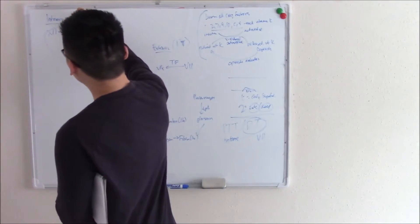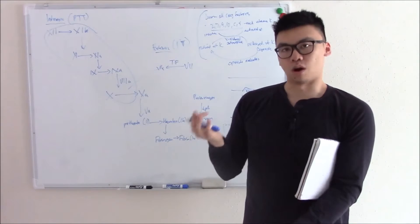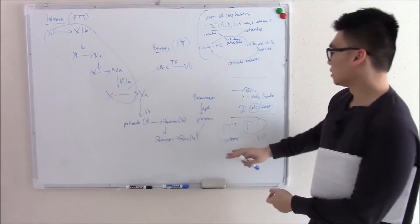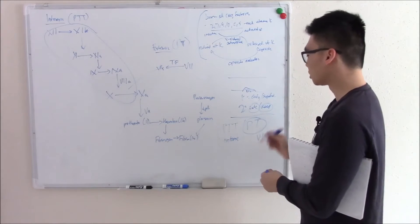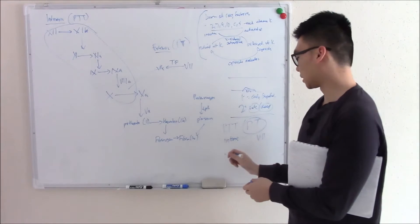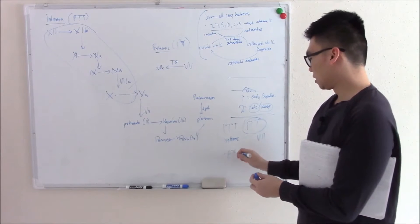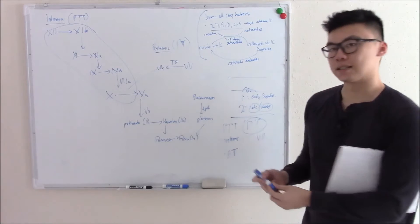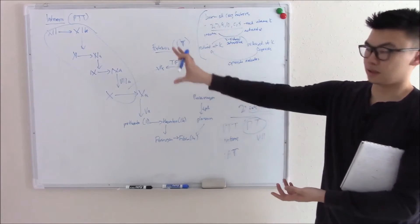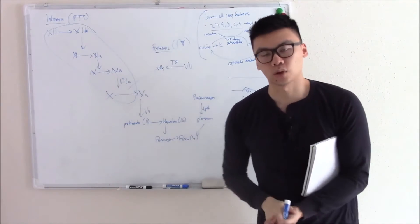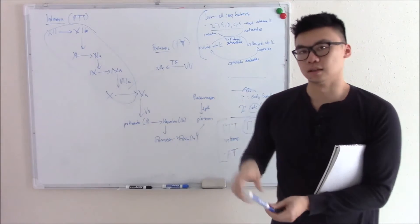PTT evaluates a ton of coag factors including all of these including 10. So we just call it intrinsic. PTT evaluates your intrinsic factors. And by doing that we can see what exactly is going wrong. And that way we can see where the problem is coming from, where the bleeding is coming from. So used in conjunction with our platelet bleeding test - do you remember what that test was? If you said bleeding time you're right. We can tell whether the bleeding is due to a platelet problem or due to a coagulation problem, even down to the pathway - intrinsic or extrinsic pathway.